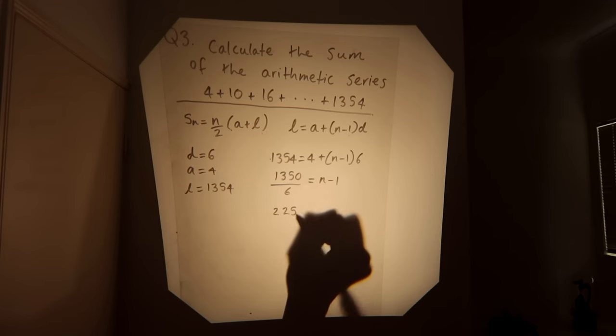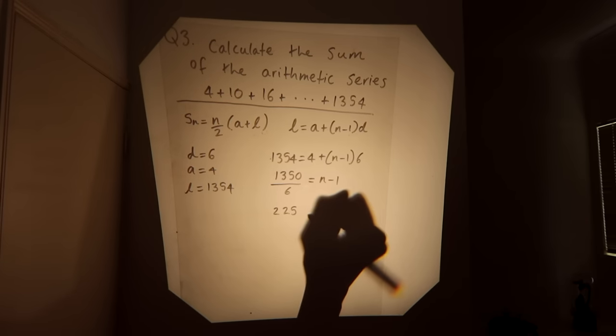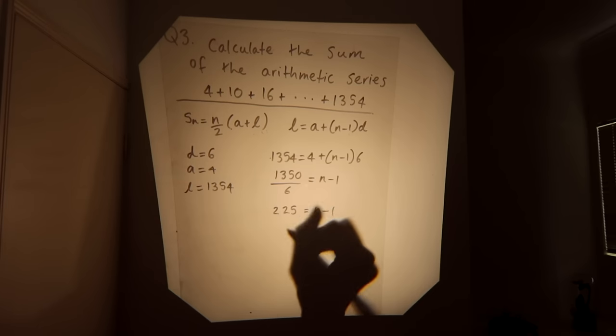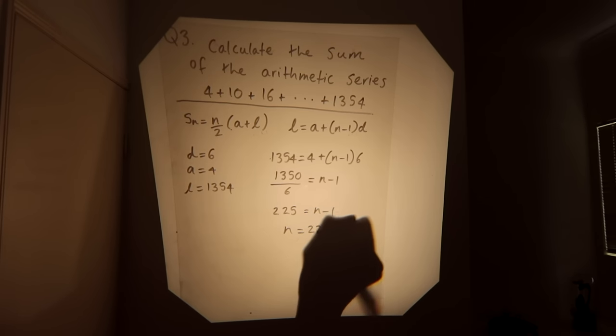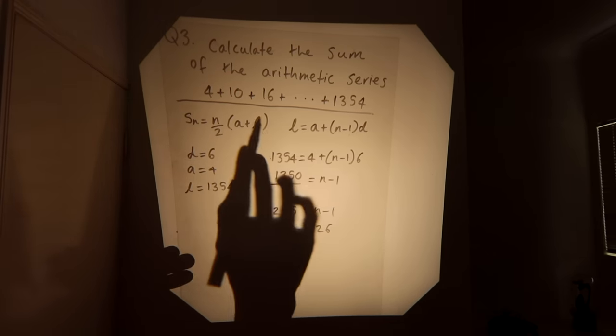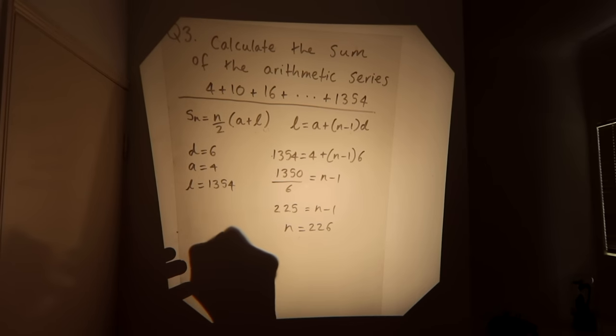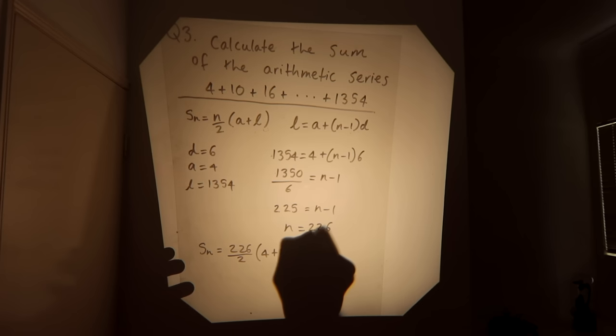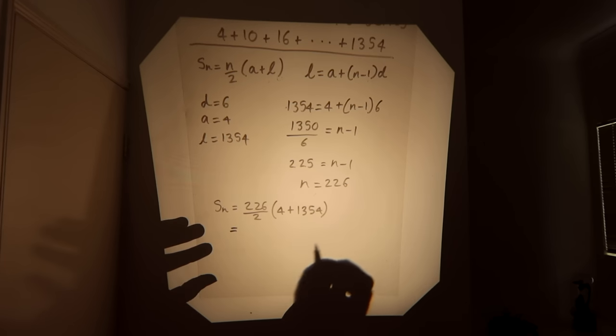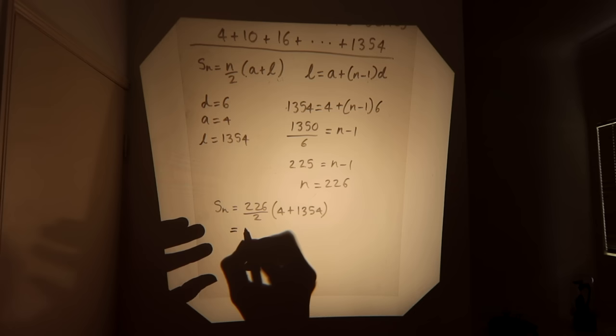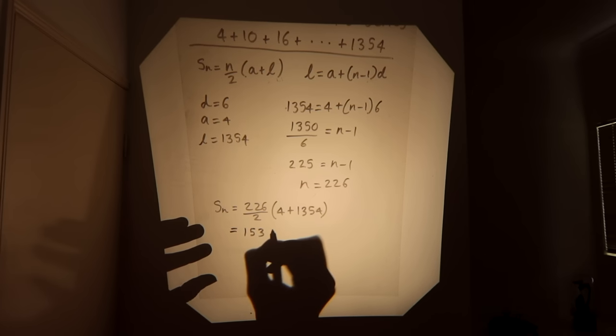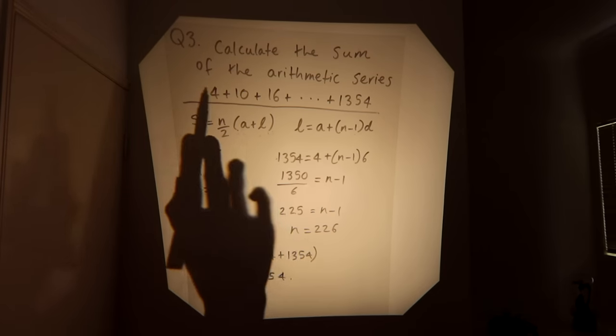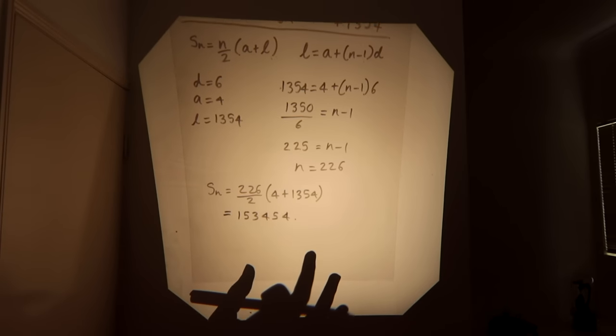And so n is 1 plus this. n is equal to 226. Now we have n and all that we need to calculate the sum. So s of n is equal to 226 over 2 times the first term plus the last term. Well, if we plug all this into the calculator, we end up with 153,454 as our answer.